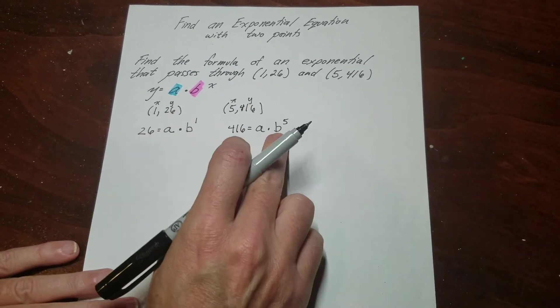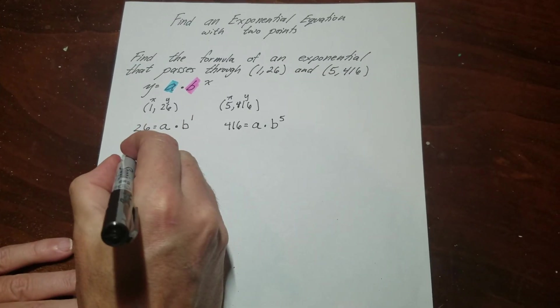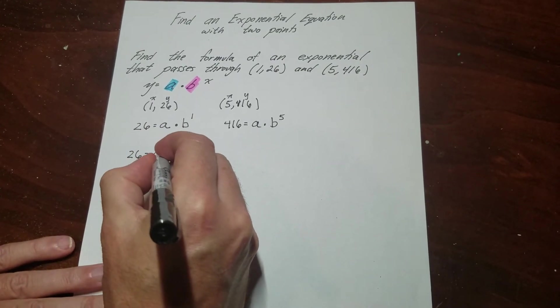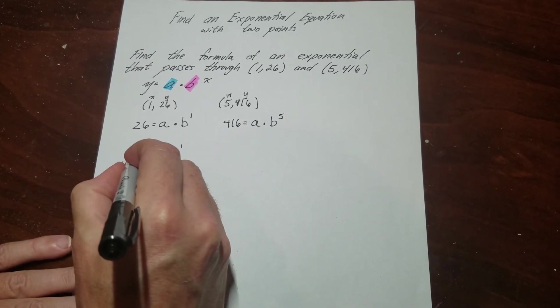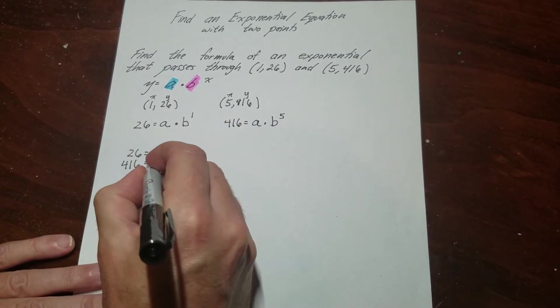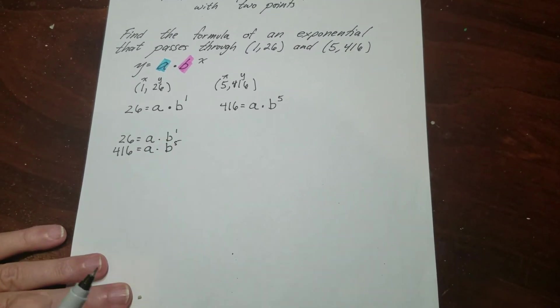So what I'm going to do is take these two equations and set up a system of equations, just like you did with lines, you just kind of stack them. Now, some people will ask, does it matter what goes on top and what goes on the bottom? Not really. I'm going to do it like this.